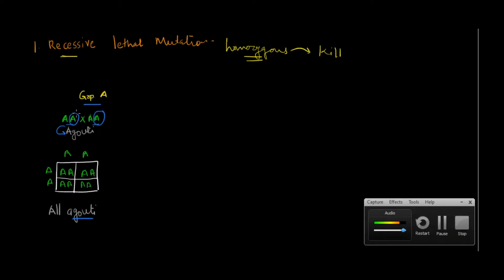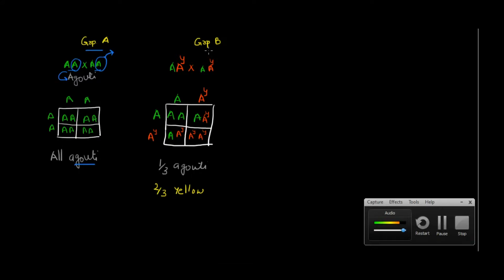Now say one of the alleles is mutated and becomes a lethal allele — we show it as capital A superscript Y. In a second group where one allele is mutated, when you cross them and follow Mendel's rules, you would expect a 3:1 ratio in the F2 generation. But instead, scientists found a ratio of one agouti to two yellow, with no homozygous recessive condition observed.